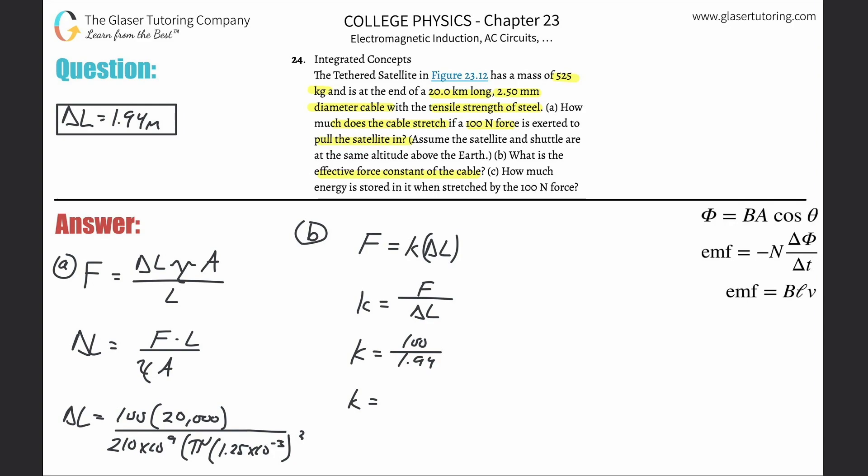The force constant now becomes 100 divided by that answer that we got before. I'm going to divide by the exact answer, so that's about 51.5, 51.5 newtons per meter, similar to the Young's modulus which was newtons per meter squared but not exactly. So that's letter B.